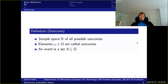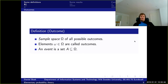The first definition we need is an outcome. We have something called a sample space, which is all possible outcomes. Each element in the sample space is called an outcome, and an event is simply a set of outcomes from this sample space.